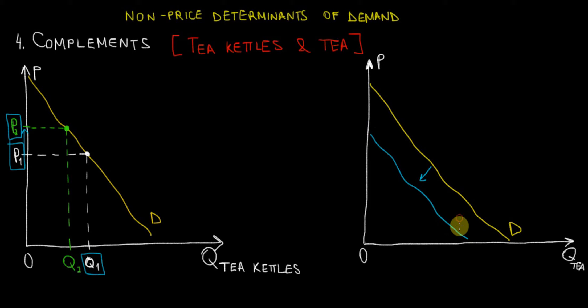The shifted curve is D2. If D1 is the original demand for tea, D2 is the new shifted demand curve because the complementary product necessary to consume the tea has fallen in demand. There is less demand for tea kettles, and as a result, the demand curve for tea falls as well.